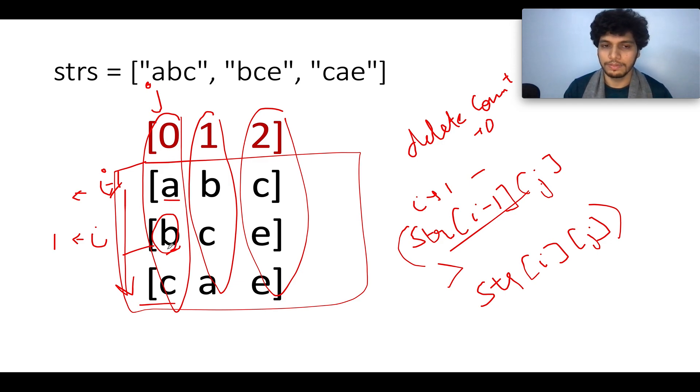Here we have B and here we have C, this is again a happy case. Let's proceed ahead. Next we have A over here and C over here. As you can see, the value at str of i minus one j is greater than the value of str of i comma j. C is greater than A, that means it is lexographically unsorted. What we are going to do is we will increment the delete count variable to one. That means we have identified one such column that is lexographically unsorted in nature, and we will abort further iteration across this column.